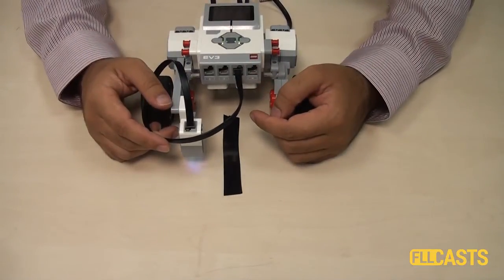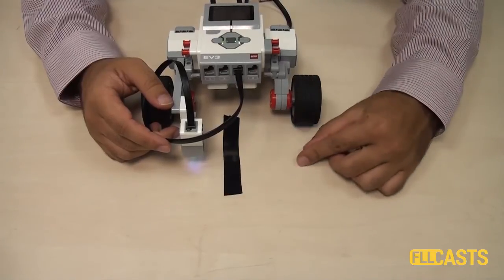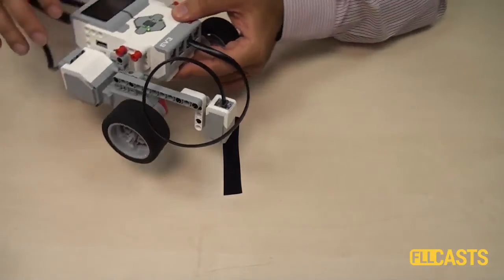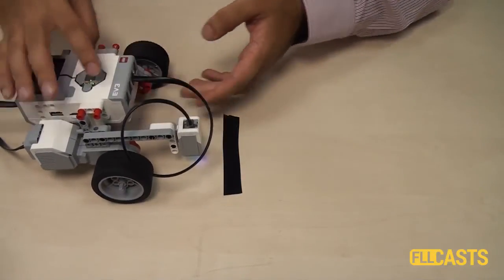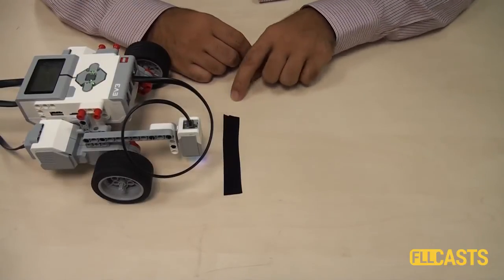This is the basic way in which we use the color sensor. In the next program, we'll try to stop at the third black line. Not the first, but the third. And you can try it before watching the next video to build a program that stops on the third black line.